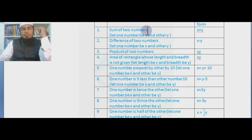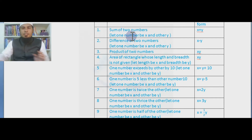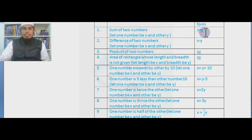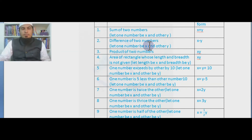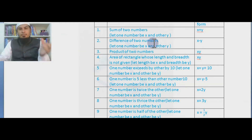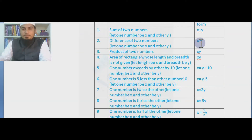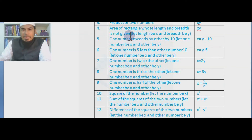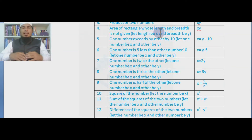First, the sum of two numbers: let one number be x and the other be y, then in algebraic form it will be x + y. The difference of two numbers: x − y, since difference stands for minus. The product of two numbers will be xy. For the area of a rectangle whose length and breadth are not given, let length be x and breadth be y, then area = xy.